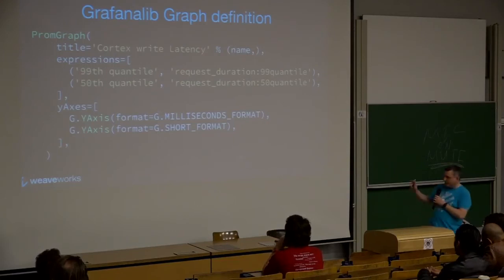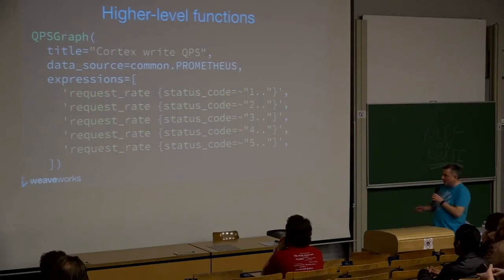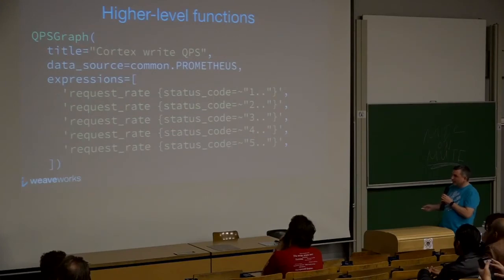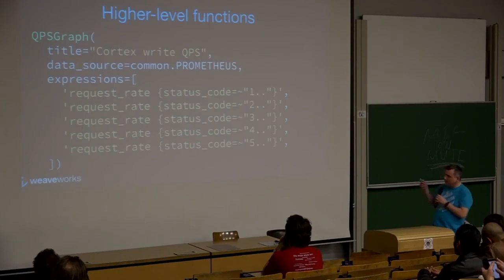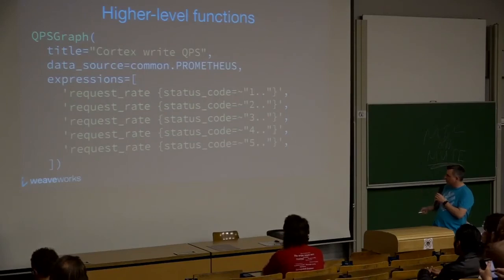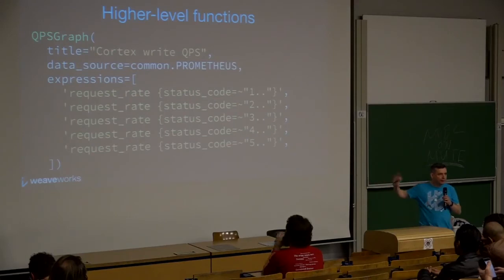That gets a little bit repetitive, so we have a higher-level function called a QPS graph. We don't need to tell it anything about the axes because queries per second is always per second. We format it in a specific way, we color it in a specific way, and then we just separate out the five different error codes — this is for an HTTP service — and stick them in an array. Behind the scenes it will generate all the coloring, all the JSON, and everything to make a standard QPS graph. We have hundreds of these in our monitoring dashboards for our own system.